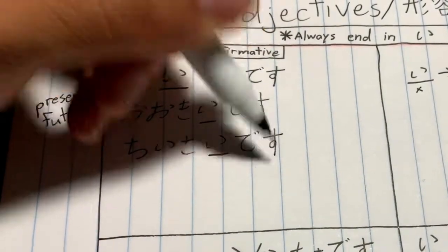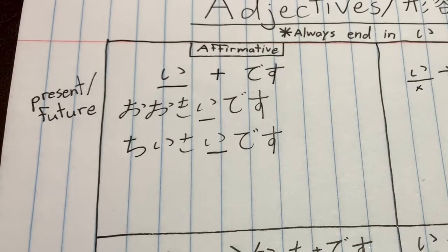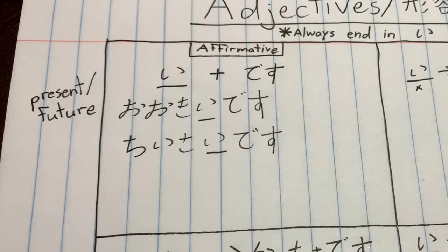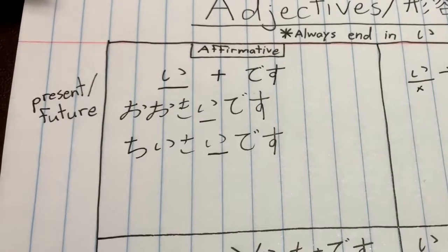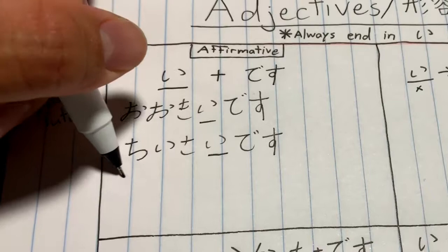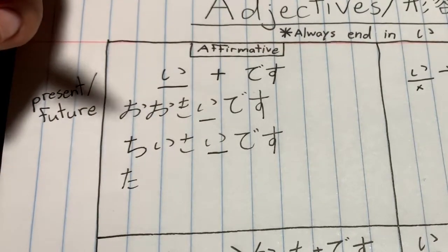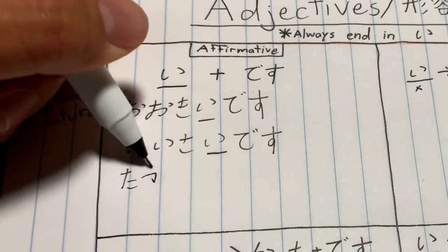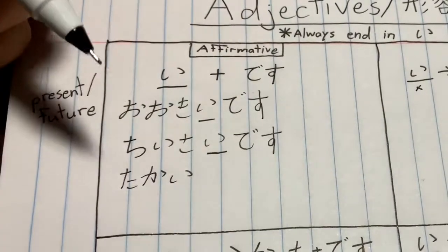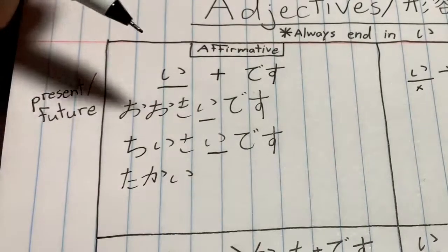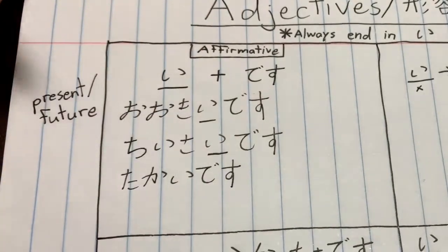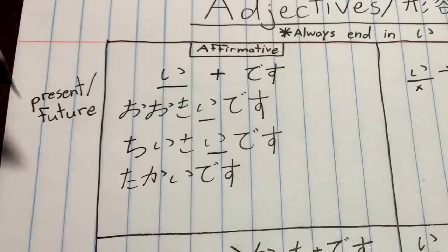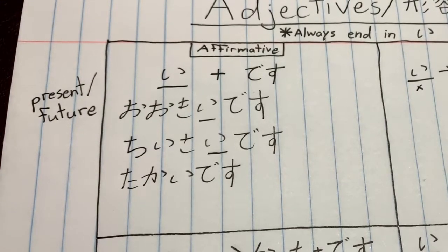Let's use one more example: 高い (takai), which is tall or expensive. To complete this we just add です (desu), so 高いです (takai desu) means 'it is tall' or 'it is expensive.' You'll know what it is based on the context - if you're in a store then it's expensive, if you're looking at a building then it's tall.